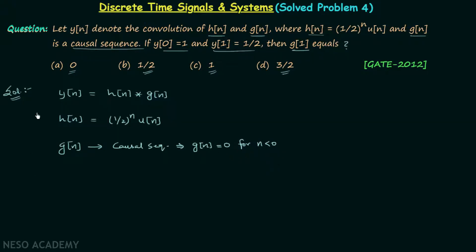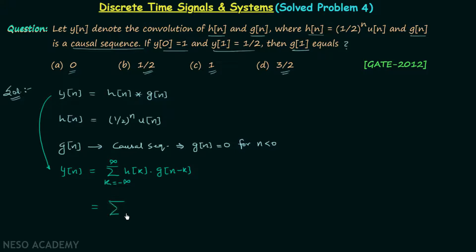Now we will focus on signal y[n]. We can write y[n] as the summation from k equal to minus infinity to infinity of h[k] multiplied by g[n-k]. We can write h[k] equal to (1/2)^k multiplied by u[k]. So in the next step we have the summation of (1/2)^k multiplied by u[k] multiplied by g[n-k]. Because of u[k], the summation from minus infinity to minus 1 will be equal to 0, so we can perform the summation from 0 to infinity and get the same result.